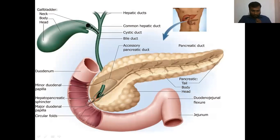The hepatopancreatic ampulla opens into the second part of the duodenum through a projection of the duodenum known as the major duodenal papilla. We can see a conical-shaped projection here - this conical-shaped projection of the second part of the duodenum is known as the major duodenal papilla. So the hepatopancreatic ampulla opens into the second part of the duodenum through this major duodenal papilla.